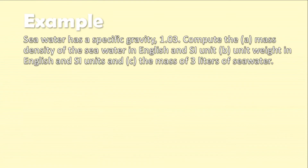For our second example, seawater has a specific gravity of 1.03. Compute: (A) the mass density of seawater in English and SI units, (B) the unit weight of seawater in English and SI units, and (C) the mass of 3 liters of seawater.